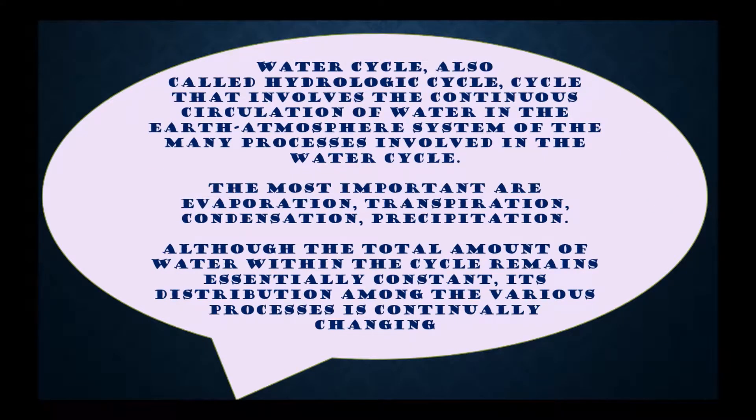Now, what is water cycle? Water cycle, also called hydrologic cycle, is a cycle that involves the continuous circulation of water in the earth atmosphere system. Of the many processes involved in the water cycle, the most important are evaporation, transpiration, condensation, and precipitation.